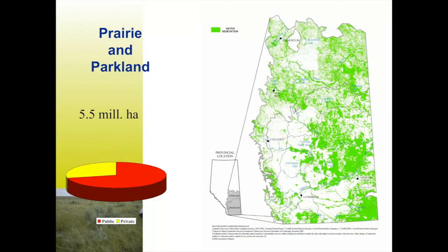Alberta has five and a half million hectares of native grassland in the grassland natural region and the central parkland. That total is missing some of the grasslands in the Peace Parkland as well as the montane grasslands of the southwest, so that number is a little low. About two-thirds of this land base is under public ownership and public management, and recent efforts like the South Saskatchewan Regional Plan have highlighted the need to conserve our remaining native prairie.